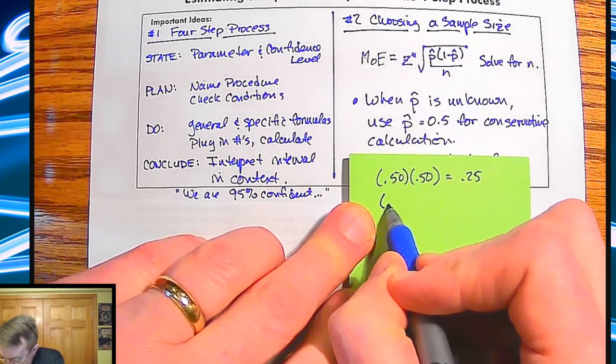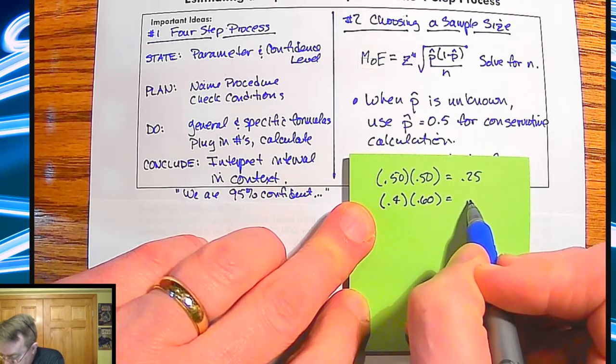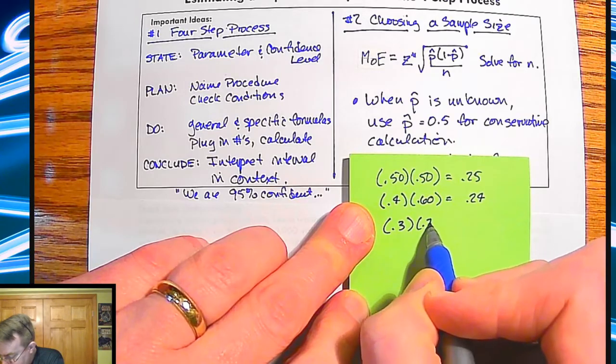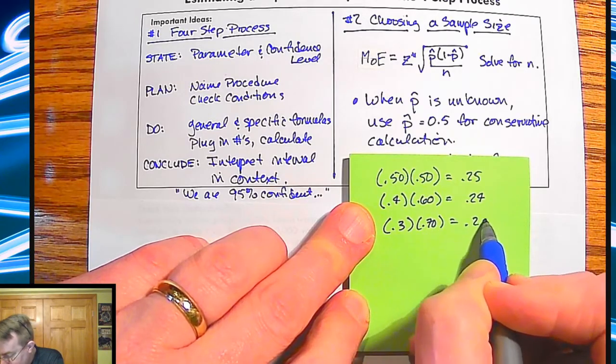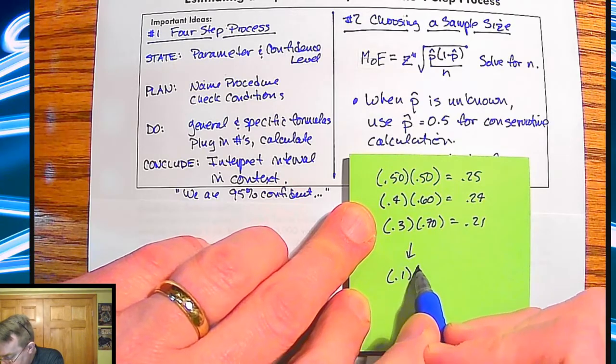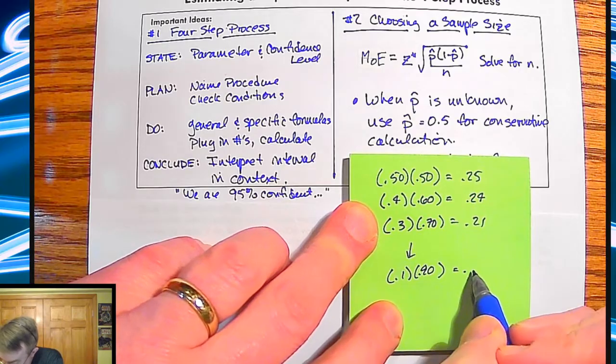So if I take 50% times 50%, I'm going to get 0.25. And if I go any smaller than that, let's say it's 40 times 60%, that turns into 24%. What happens if I go 30 and 70? That becomes 21 and so on and so on.